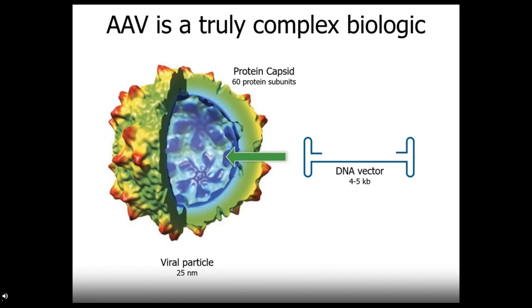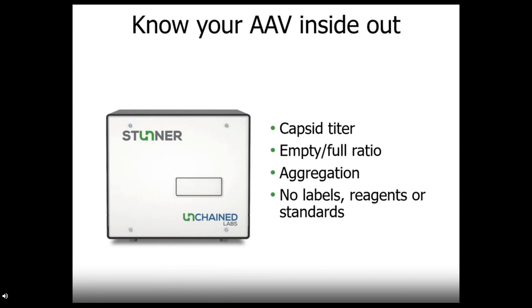Okay, so now let's take a look at our second application, AAV quant. When characterizing AAV, you have a lot of things going on. It's important to know how much protein is present, how much DNA is present, if things are intact, if they're the right size, and if there's any aggregation. It's a truly complex biologic that demands a lot from characterization techniques. Stunner brings it all together to deliver answers on capsid titer, empty full ratio, and aggregation, with again only two microliters of sample in less than a minute, and there's no labels, no reagents, or any standards. You just use the sample you've got.